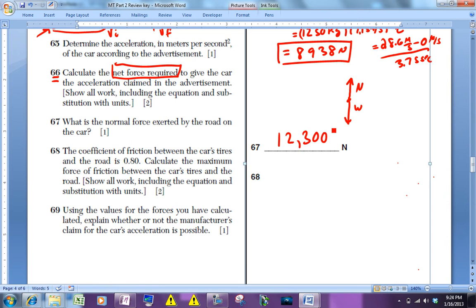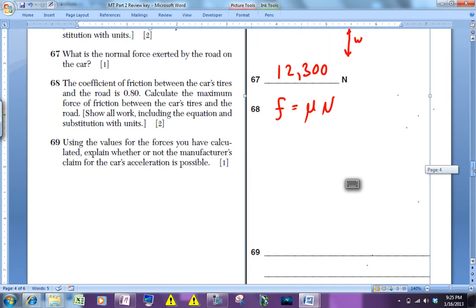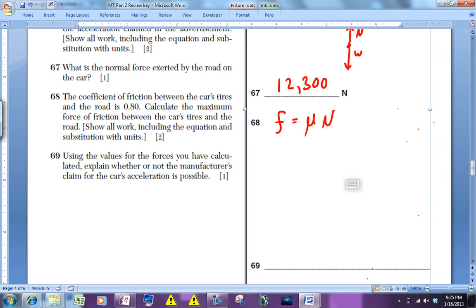Now 68 asks you to calculate the force of friction between the car and the road, so to do that we're going to use the equation for friction, which is F equals mu N. You're told that the coefficient of friction is 0.8. Notice, coefficient of friction doesn't have any units because it's just a ratio of the friction force compared to the normal force.